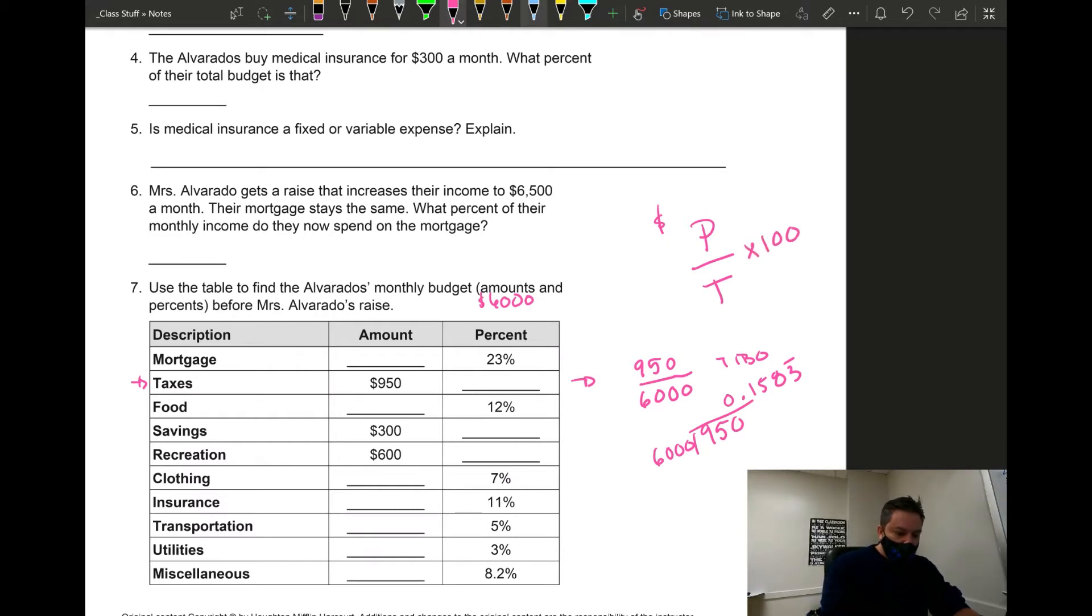It'll be right there. So $950 is 15.83% of the $6,000. Again, if you are given the amount you have to do part over total.